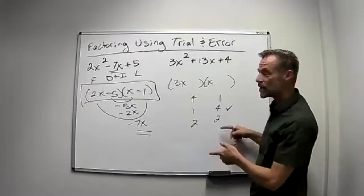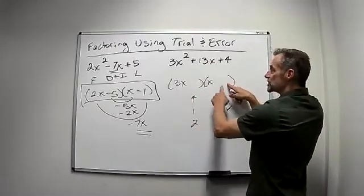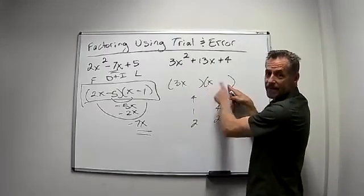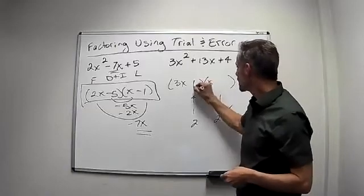And we'll show the 2 and 2 doesn't work. If I plug 2s in, I'm going to get 3 times 2 is 6. 2 times 1 is 2. Those add up to 8, not to the 13 that I need. So it has to be this 1 and the 4.